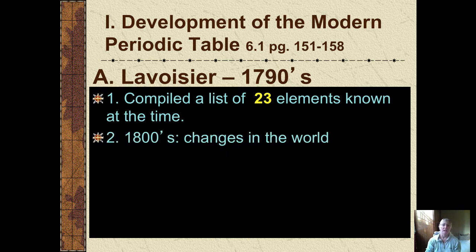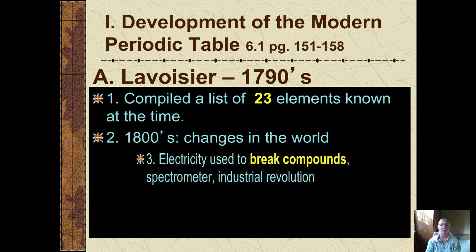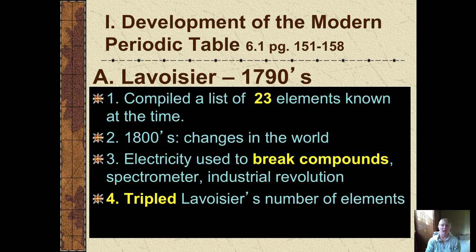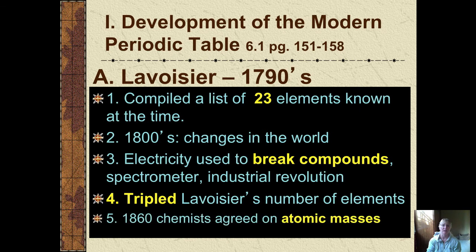In the 1800s, the dramatic changes brought about by the Industrial Revolution allowed us to use things like electricity to break down compounds into their elements and to analyze substances using spectrometers. So the number of elements Lavoisier had discovered by the late 1700s tripled to about 70.